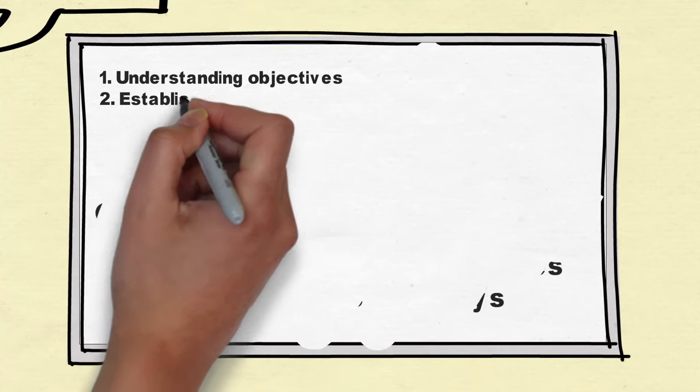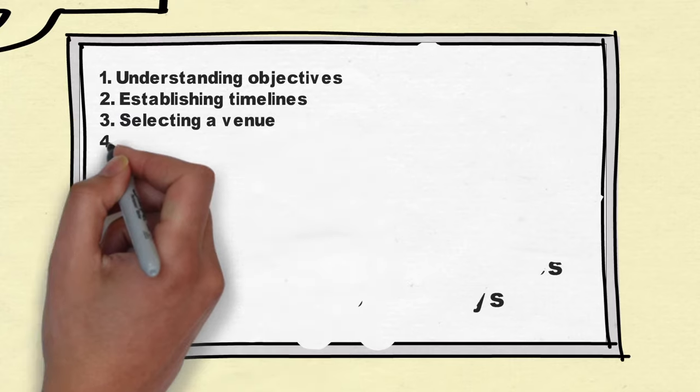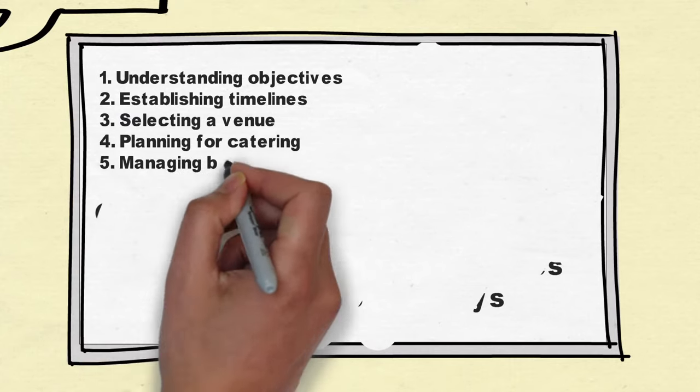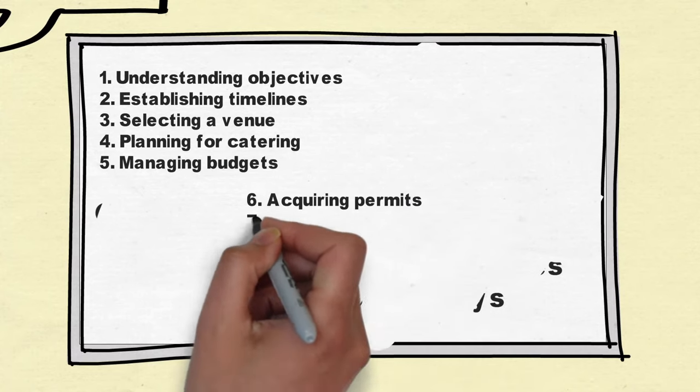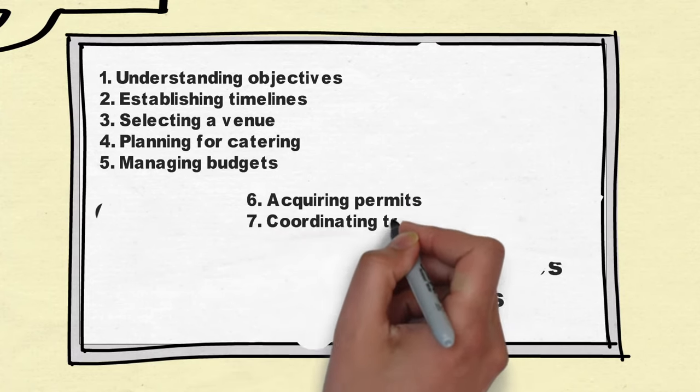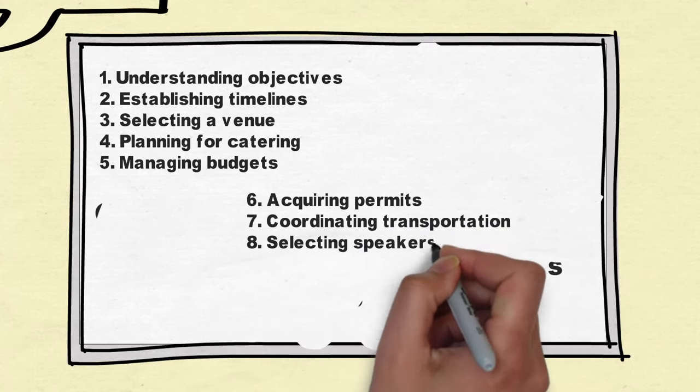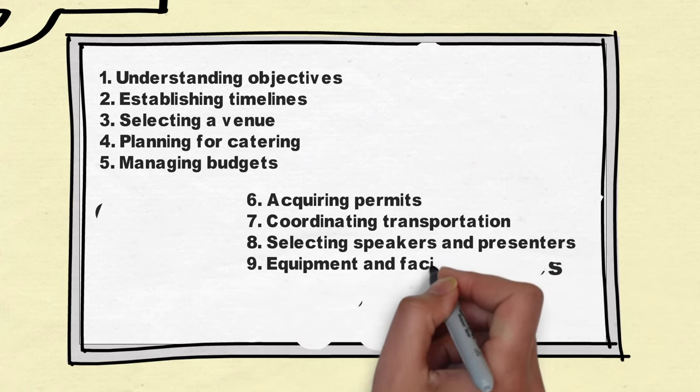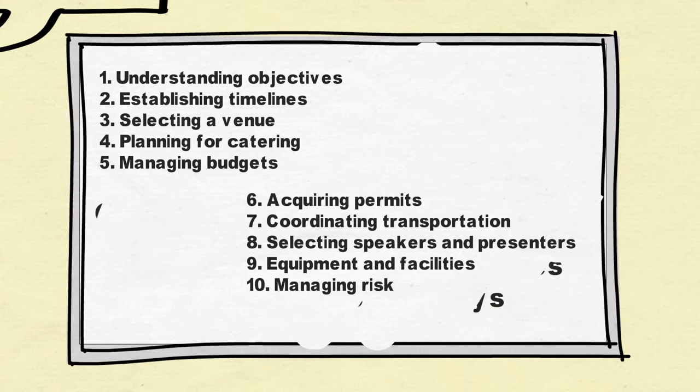The key elements of event management include: understanding objectives, establishing timelines, selecting a venue, planning for catering, managing budgets, acquiring permits, coordinating transportation, and selecting speakers and presenters.